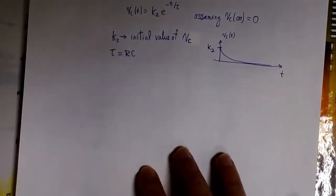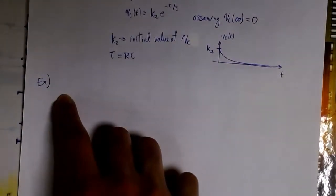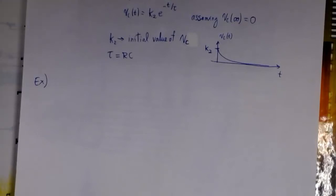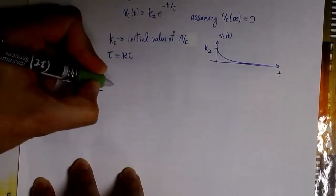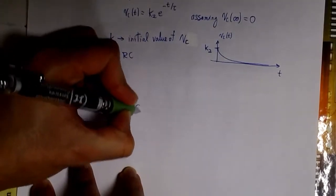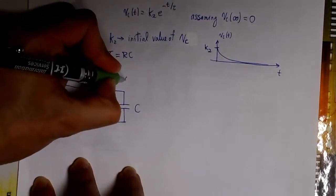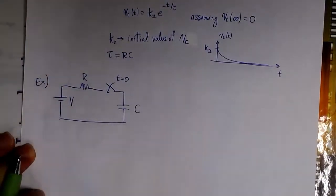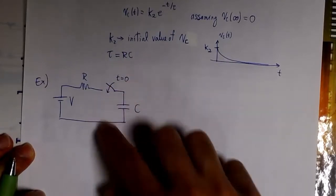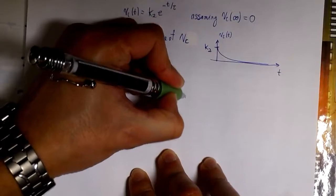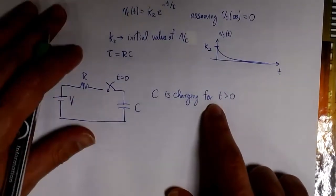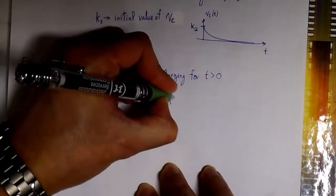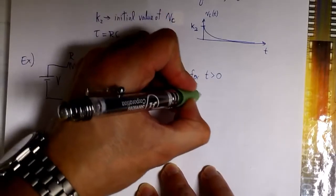Let's see the easiest example for this type of problem. Consider we have a voltage source V in series with a resistance. We're going to connect the capacitor here with a switch, and we're going to close this switch at t equals zero. So for any time t less than zero, the capacitor is disconnected and the switch is open. At t equals zero we close the switch. We're assuming the capacitor is fully discharged because it was disconnected for t less than zero. When we close the switch, it starts charging, and this is the equation we use: k1 times (1 minus e to the minus t over tau). We have to find k1 and tau.